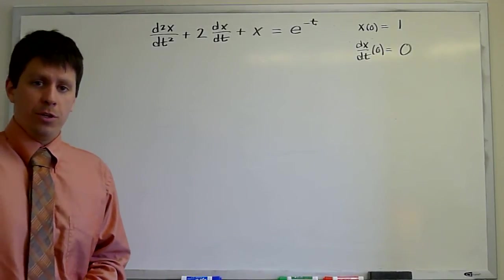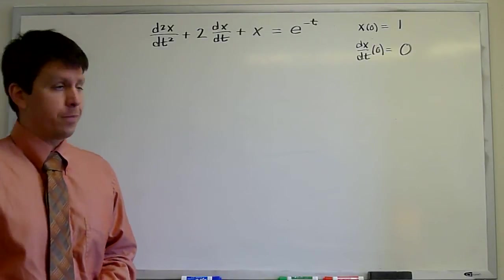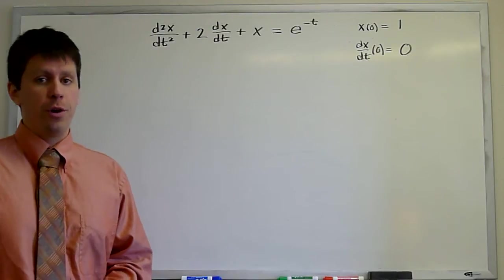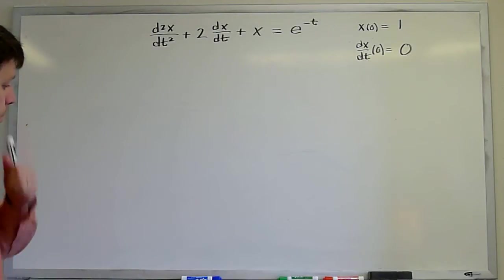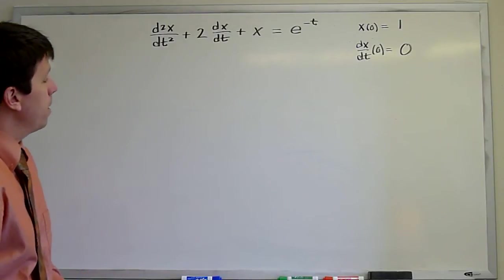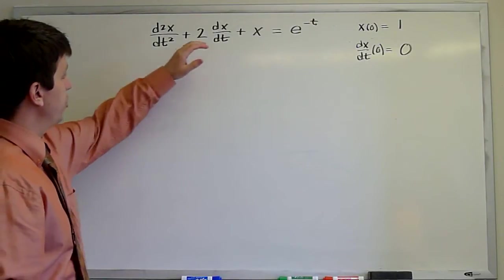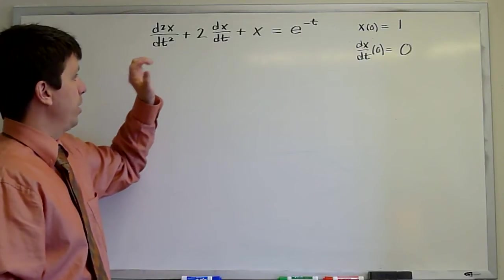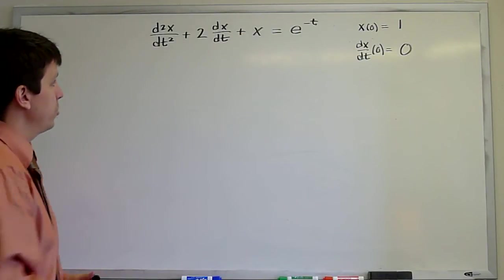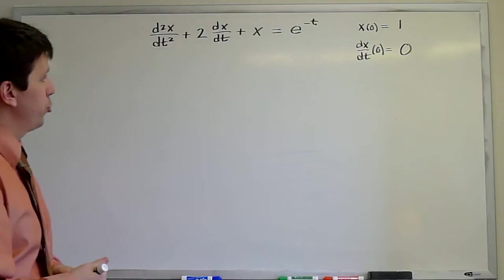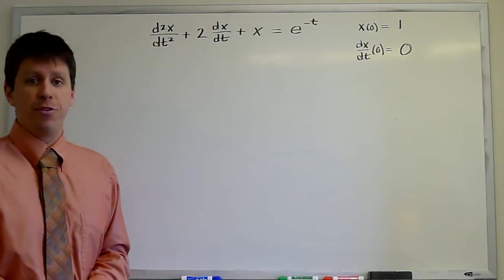This is going to be an example of the use of undetermined coefficients to solve a second-degree constant coefficient forced ordinary differential equation. So here we have our second-order ODE. We see that it is constant coefficients. There are no t-dependencies on the left-hand side, only on the right-hand side in the forcing. It's a constant coefficient problem with some initial conditions. So let's apply the method of undetermined coefficients.